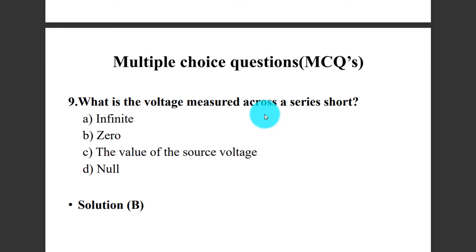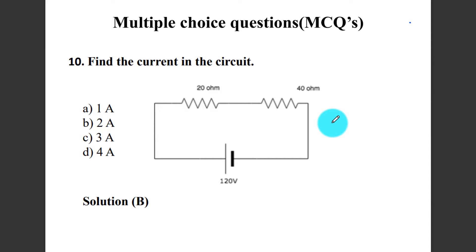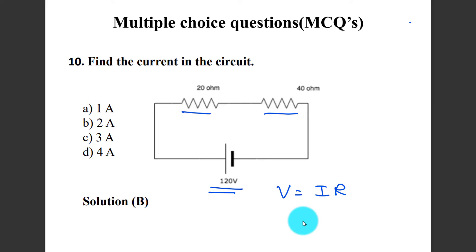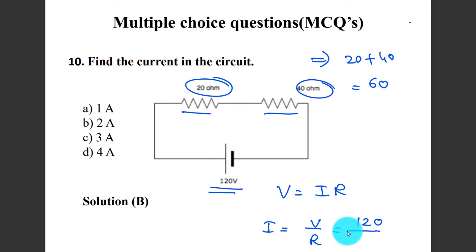What is the voltage measured across a series short? The answer is 0. Next: find the current in the circuit with voltage 120 V and resistances 20 ohms and 40 ohms in series. Using I equals V divided by R total, where R total equals 20 plus 40 equals 60 ohms. I equals 120 divided by 60 equals 2 amperes.